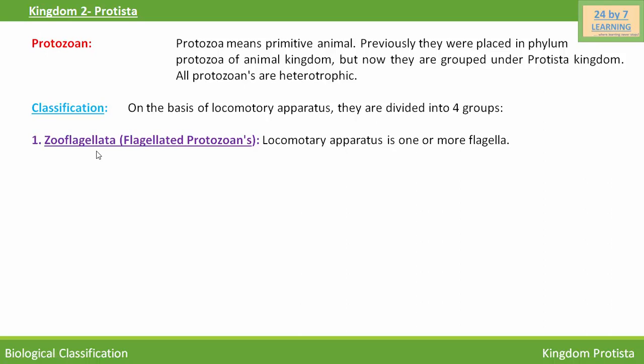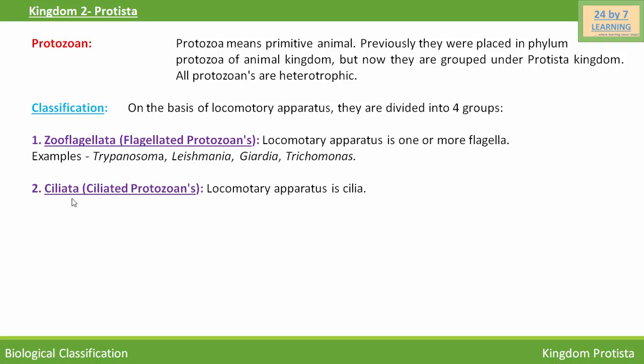First are zooflagellates, also called flagellated protozoans. These are protozoans which have one or more flagella as their locomotory apparatus. Examples are Trypanosoma, Leishmania, and Trichomonas. Second is Ciliata — those protozoans which have cilia as their locomotory apparatus are called ciliated protozoans. Examples are Paramecium and Vorticella.